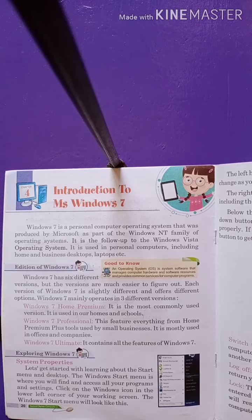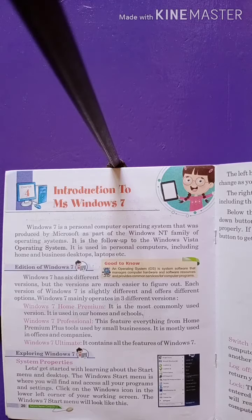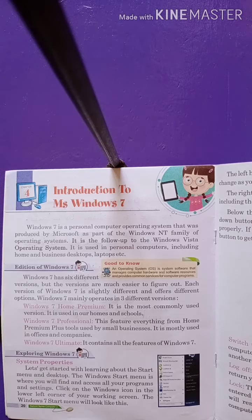Windows 7 is used for personal computers including home, business, desktop, and laptop etc. Windows 7 personal use करने के लिए, personal computer, business, desktop या laptop के यूज के लिए बनाया गया था। Windows 7 six different versions में है — that is Home Premium, Professional, and Ultimate.